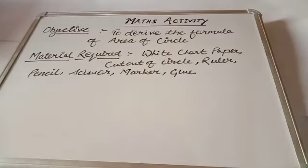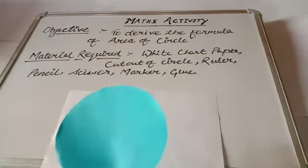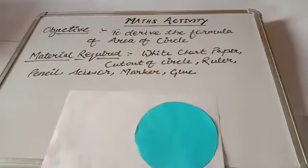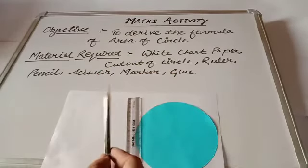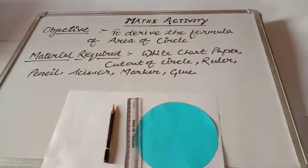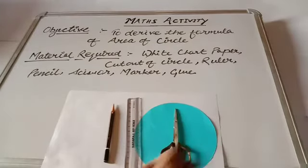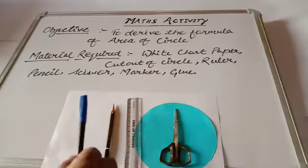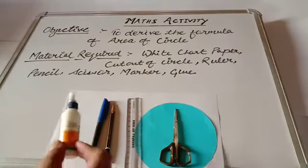For this, the materials required are: white chart paper, a cutout of a circle, ruler, pencil, scissor, marker, and glue.